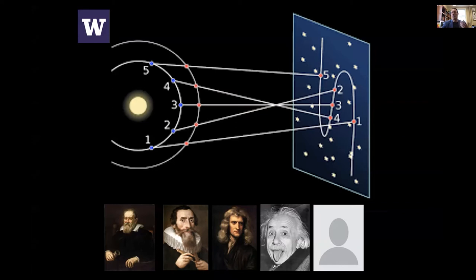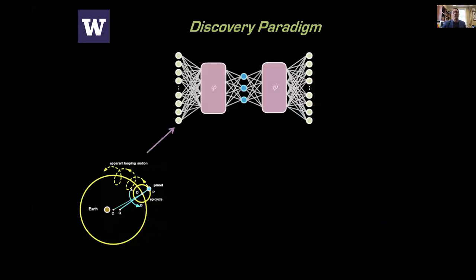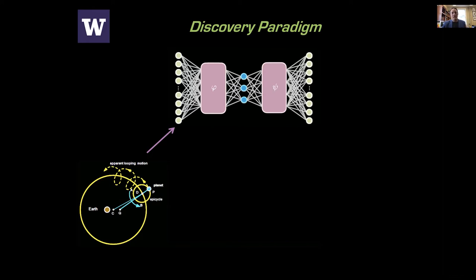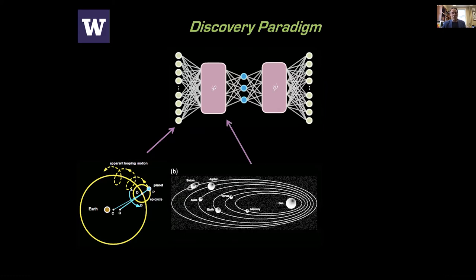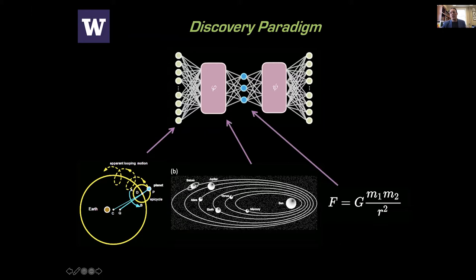Let's go back to the paradigm: learn coordinates, learn dynamics. In the planetary motion context, your original observation is retrograde motion from Earth — circles on circles, the Ptolemaic system. The coordinate transformation learns that if you move the center to the sun, everybody is an ellipse, and then you can learn the gravitational one-over-r-squared law. That's what we're trying to do with this neural network.